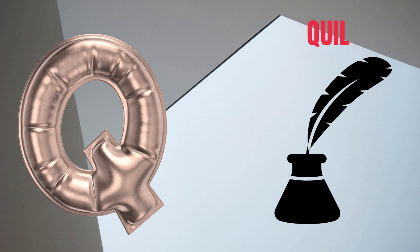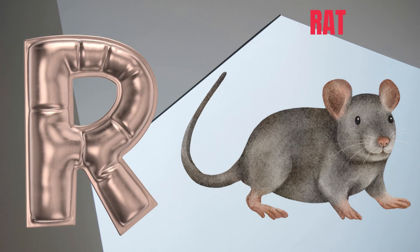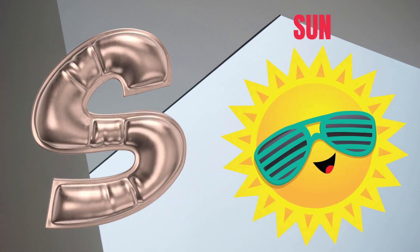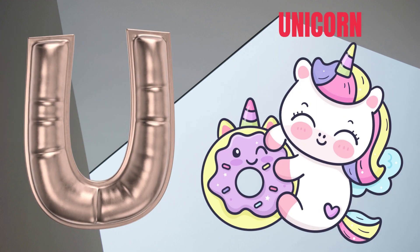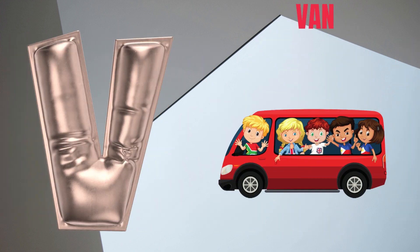Q for quick. R for rat. S for sun. T for... U for unicorn. V for van.